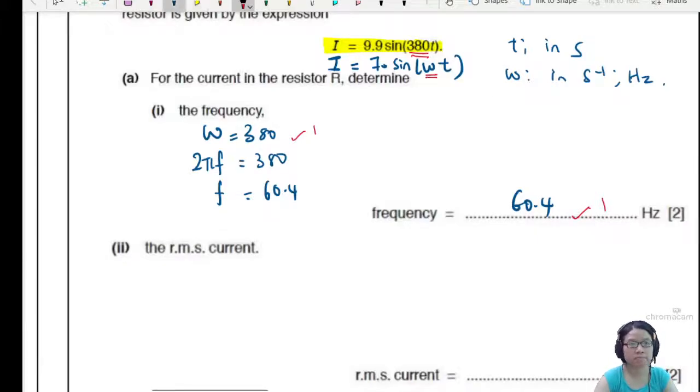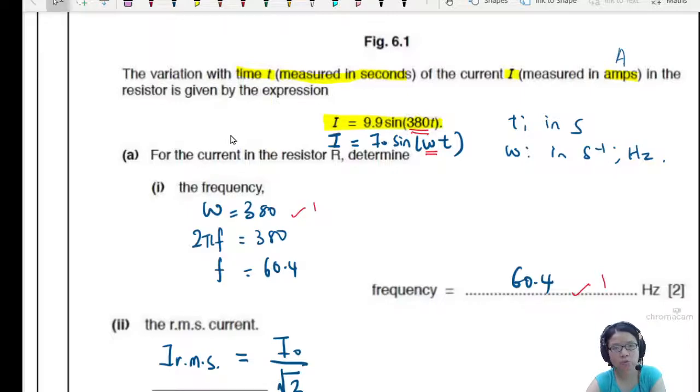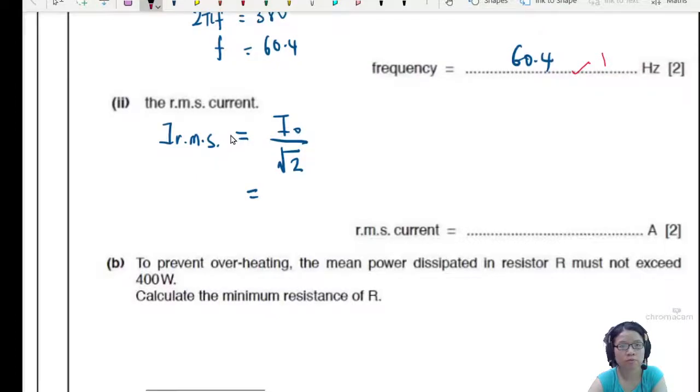Root mean square current. So either you understand, or I guess you could memorize that to find the root mean square, we will take the peak divide by root 2. I devoted 30 minutes of my life explaining that. So go and watch it. So I'll take the peak current. In this case, if we stare at the equation, I₀ is equal to 9.9. So I'll put 9.9 divided by root 2.